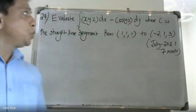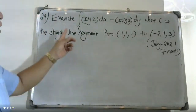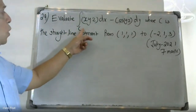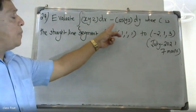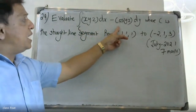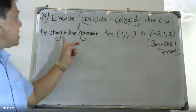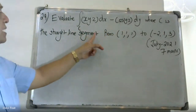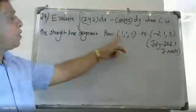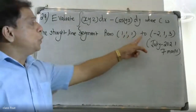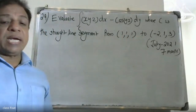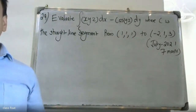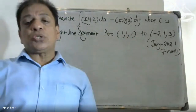Good morning, students. At the university, I want to give you a question. X, Y, Z, D — X minus 4, Y, Z, D, Y. Where is the stated segment from (1, 1, 1) to (-2, 1, 3)? This is an 8-mark question.